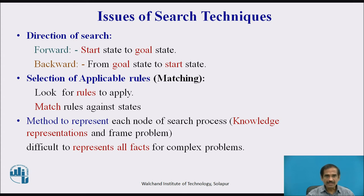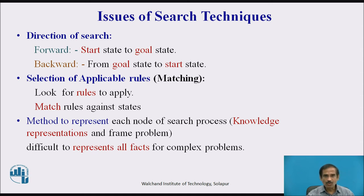The issues in searching techniques involve: first, the direction in which the search should be done. We have two alternatives — a forward direction from start state to goal state, or a backward direction from goal state to start state. This depends on what the designer wants to detect and whether the important state is closer to the goal or to the start. Either way, we must go forward or backward.